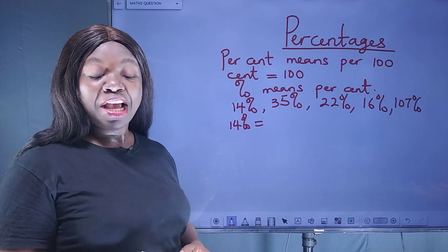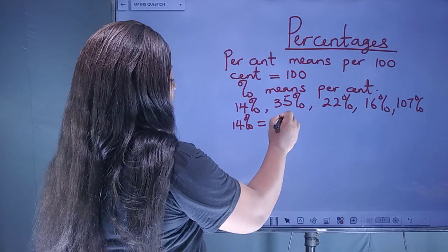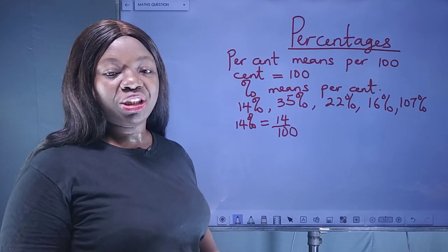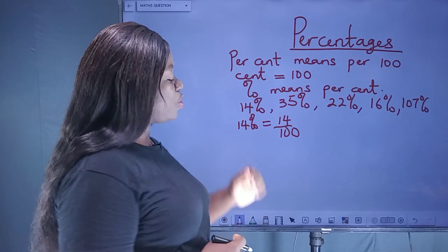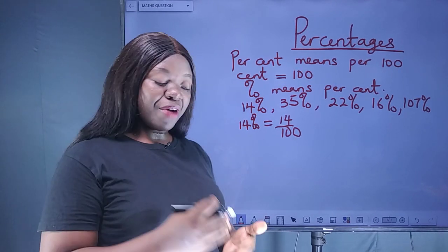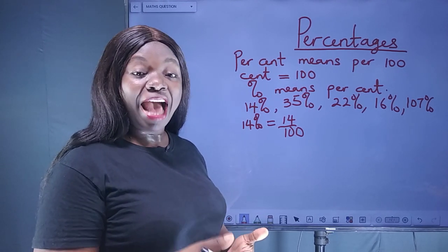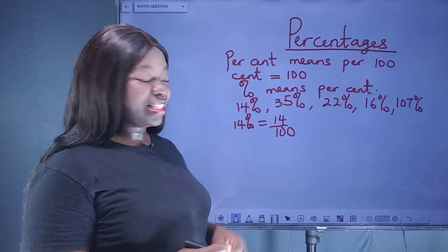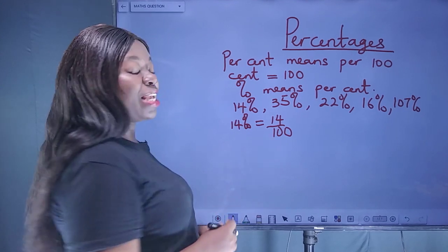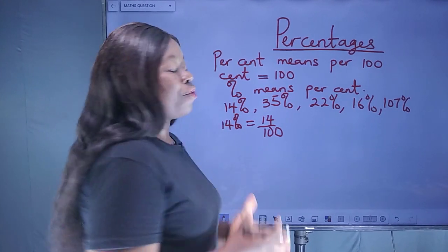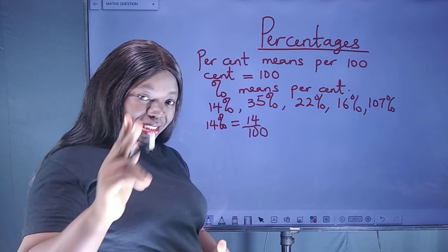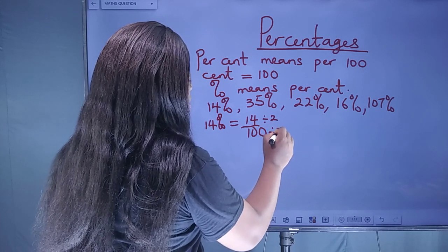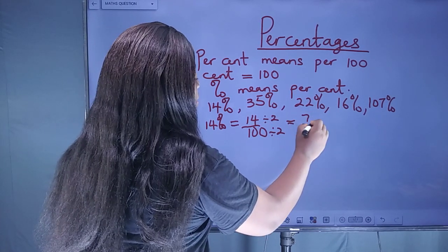To change 14 percent to a fraction, you divide by 100, so that is 14 over 100. Are we done? Not yet — we need to reduce this fraction to its lowest term. We find the common factor of the numerator and denominator, a number that can divide both at the same time. Two can divide 14 and 100, so 14 ÷ 2 = 7 and 100 ÷ 2 = 50, giving us 7 over 50.